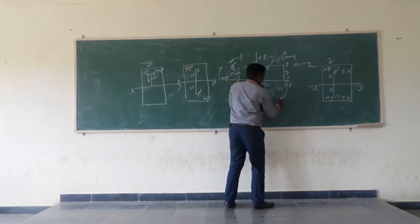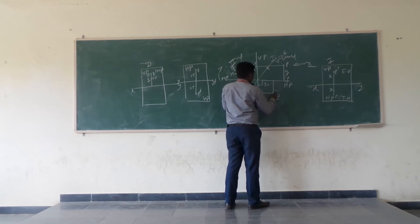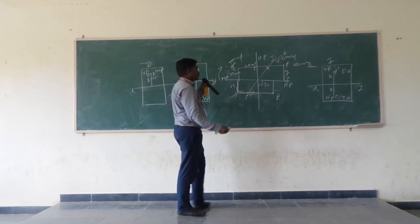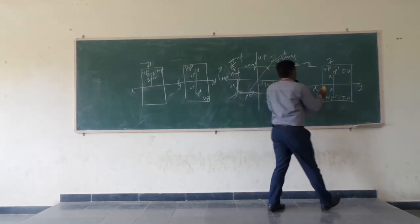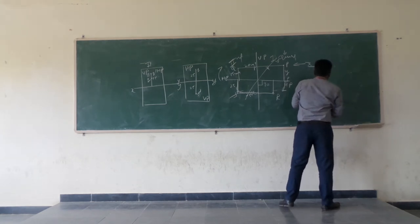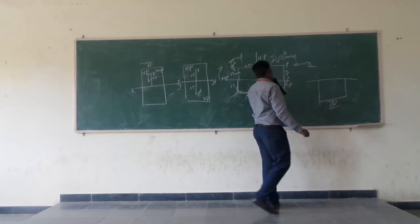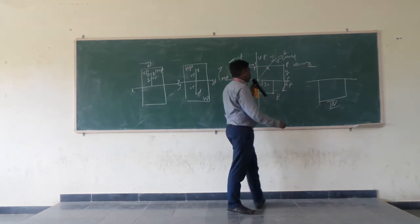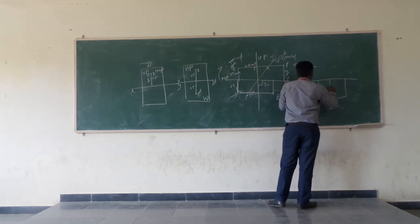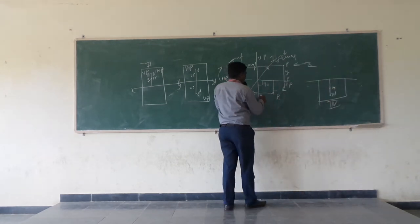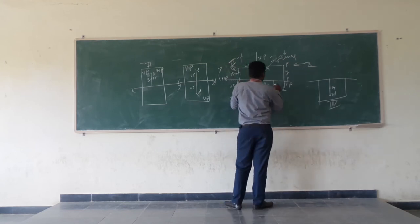Now, if you see a point R in the fourth quadrant: when you want to have a projection of a point in the fourth quadrant, we will be rotating the horizontal plane in the clockwise direction. So the horizontal plane and vertical plane both will be coming below the XY line. Both views will be coming below the XY line. The two planes — horizontal plane and vertical plane — are overlapping each other. The representation of the projection will be: r dash will be the front view and r will be the top view. The distances are 30 mm from the vertical plane and 15 mm from the horizontal plane.